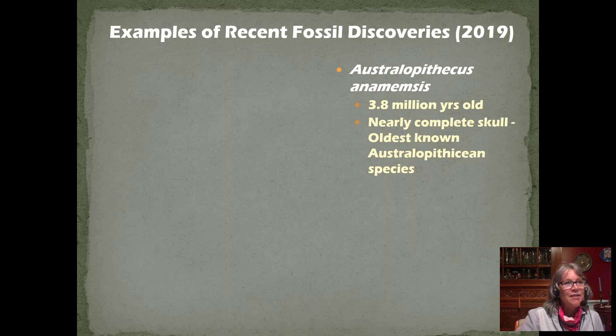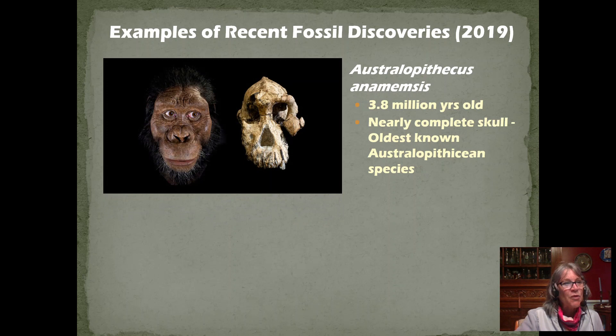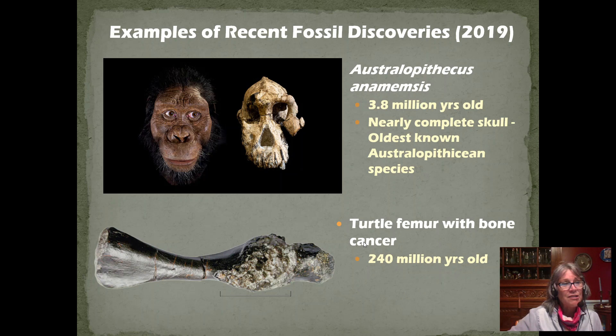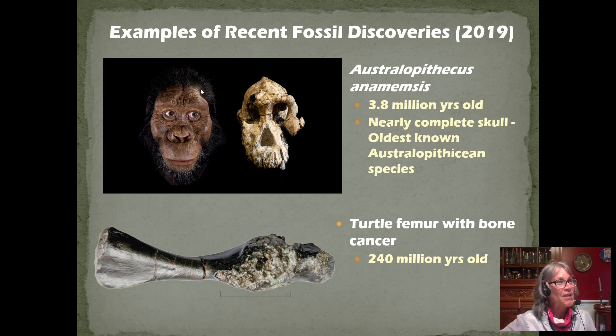Some more recent fossil discoveries: Australopithecus anamensis is a 3.8-million-year-old, nearly complete skull — the oldest known Australopithecine species, a fairly close relative in the transition toward Homo. Another recent find was a turtle femur with bone cancer, showing that cancer existed 240 million years ago. It's not a recent thing — it's been around. Cancer is a naturally occurring event, and we may have exacerbated instances of it with some of our treatment of the environment.